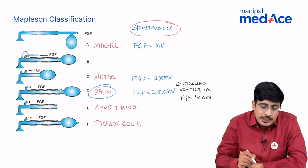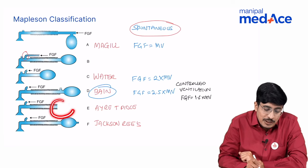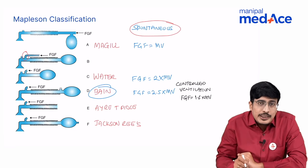ISTP is an incomplete circuit. As you can see there is no reservoir bag here. So it is an incomplete circuit and we do not use it anymore.